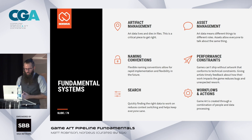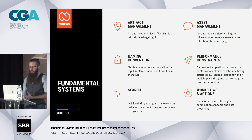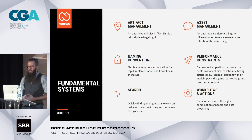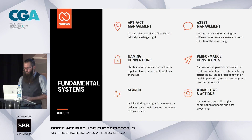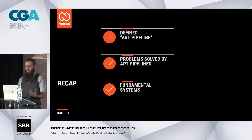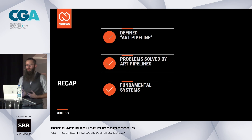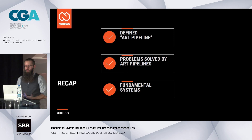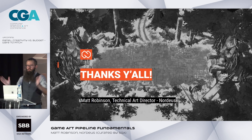As a recap: we talked about artifact management, naming conventions, search, asset management, performance constraints, workflows, and actions. We identified what an Art Pipeline is, some problems that are solved by having robust art pipelines, and we talked about those systems. Thanks, everyone.